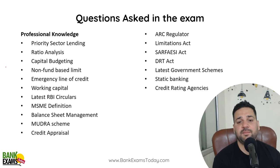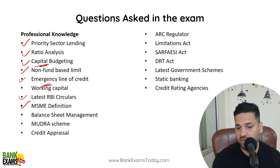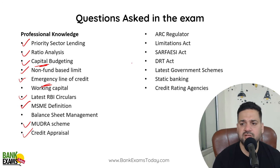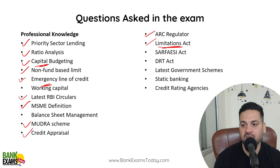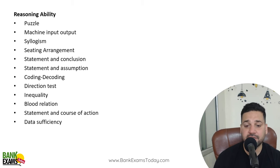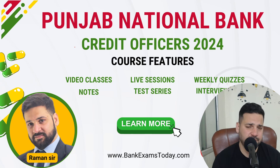Based on previous papers: priority sector lending questions came, ratio analysis, capital budgeting theory, non-fund based limits, emergency credit line, RBI circulars on MSME, MSME definition, Mudra scheme (a government scheme), credit appraisal questions, ARC regulator, limitation act (from the documentation chapter — which covers limitation law, registration law and stamp duty law), SARFAESI, DRT, latest government schemes, static banking, and credit rating agencies. That is basically the kind of paper that appeared.